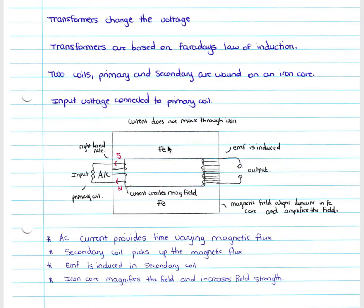The secondary coil then picks up the amplified magnetic field — the magnetic flux. The magnetic field given off is amplified by the iron and therefore picked up by the secondary coil. An EMF is induced in your secondary coil by Faraday's law — remember to check out Faraday's law in our previous video if you're not sure about that.